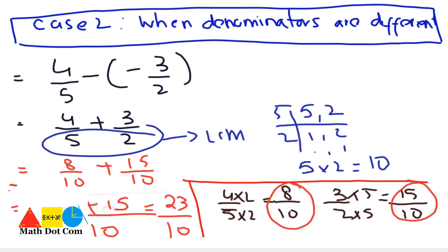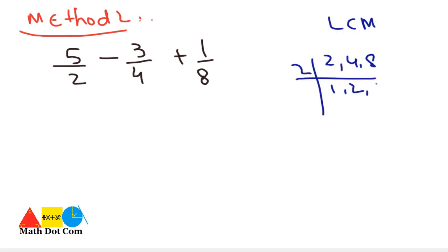And the quicker method is one more. Find its LCM as 2, 1, 0, 2, 2, 0, 4, 2, 4, 0, 8, 2, 1, 0, 2. And 2 into 2 into 2 into 2, LCM will be 8. 8 here. Now you will check this. How you can make 2, 8 by multiplying by 4. Then that 4 will be multiplied with 5.